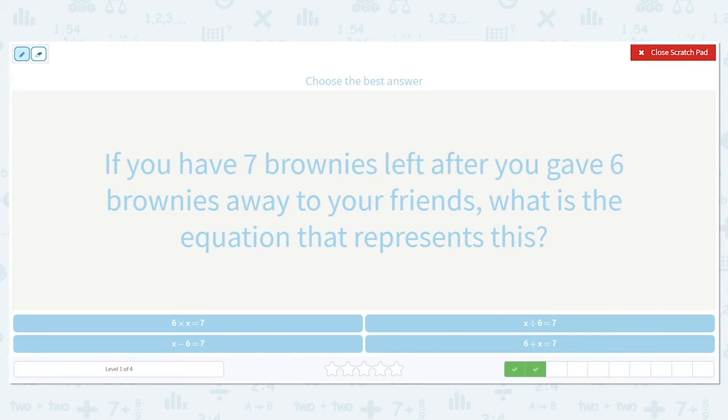So think about what do you think my equation might be. Well, I have seven brownies left, so that means I have seven left. That's my total remaining. I gave away six, so am I adding six or am I subtracting six? I'm subtracting six. But does it say in the problem how many brownies I started with? No, so that's where we put the x. So x minus six equals seven.